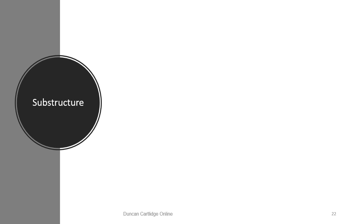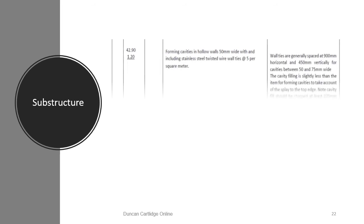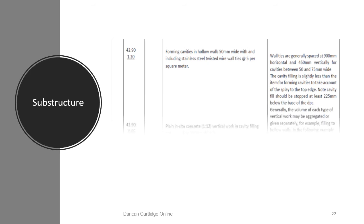This page contains yet another two items that can utilise the mean girth. Forming a cavity and building in wall ties is a measurable item, as is the concrete cavity filling discussed earlier. Even though the concrete filling is only 50mm wide, it is measured in cubic metres.